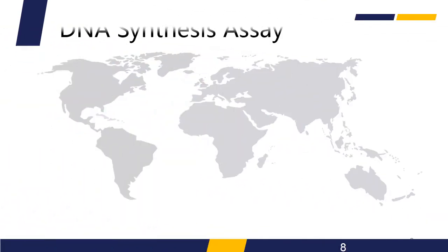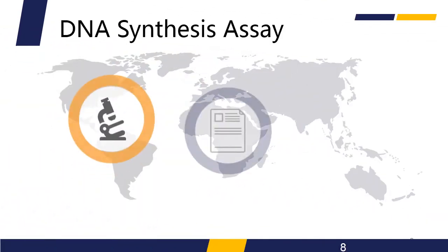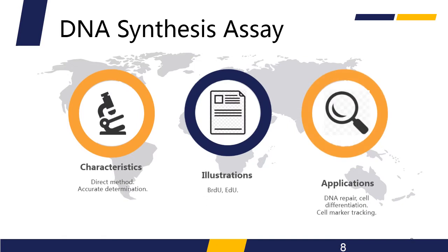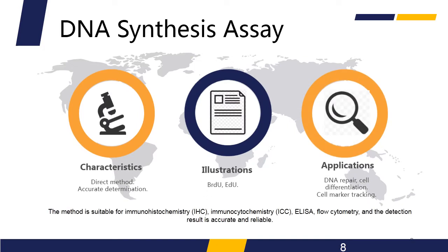Based on this principle, several techniques have been developed for the quantification of cell proliferation through the measurement of newly synthesized DNA, including BrdU and EdU methods. The labeled proliferating cells can be detected by several methods including immunohistochemistry (IHC), immunocytochemistry (ICC), flow cytometry, and others. It is a reliable and reproducible method for the study of cell proliferation.